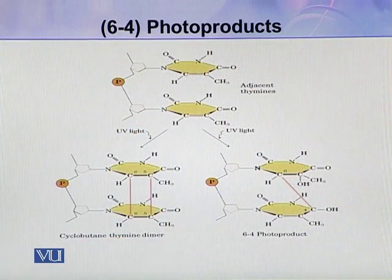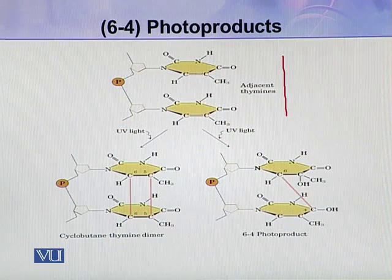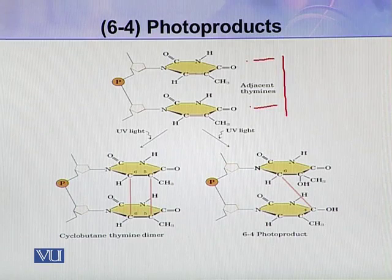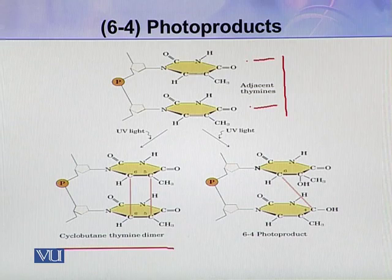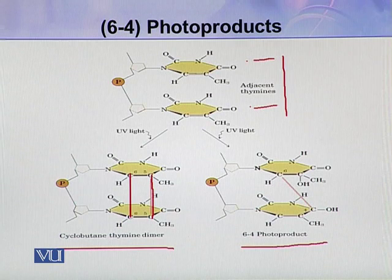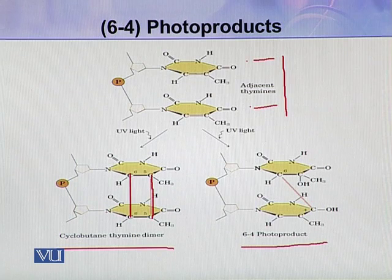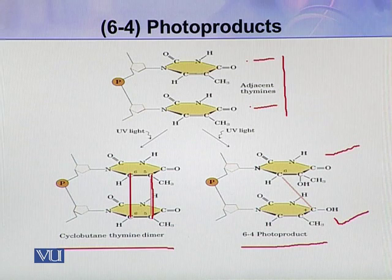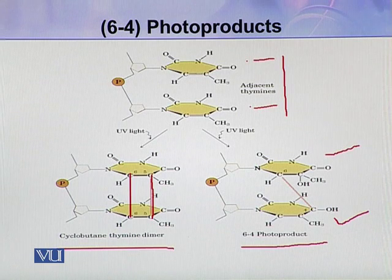In normal DNA, two thymines are present adjacent to each other. UV can damage this DNA by two ways: cyclobutane thymine dimer formation, and 6-4 photo product formation. In CPD, a dimer forms with two bonds between C5 and C6 atoms of adjacent pyrimidines. But in 6-4 photo product formation, the bond forms between the C6 of one thymine and the C4 of the adjacent thymine.